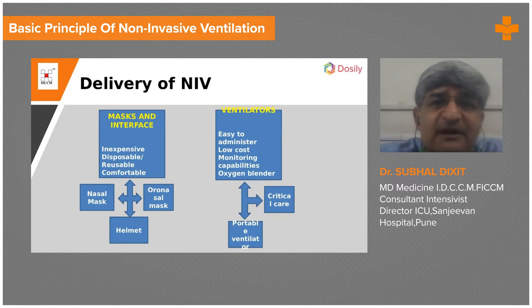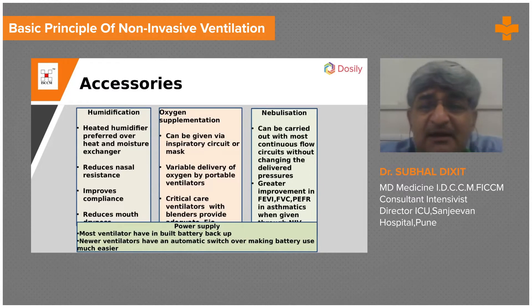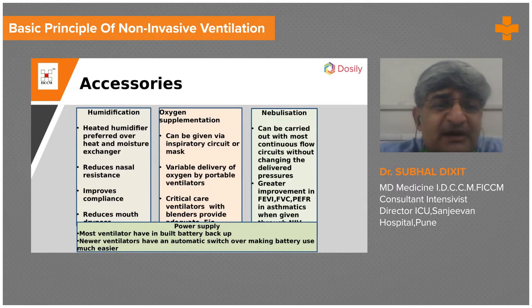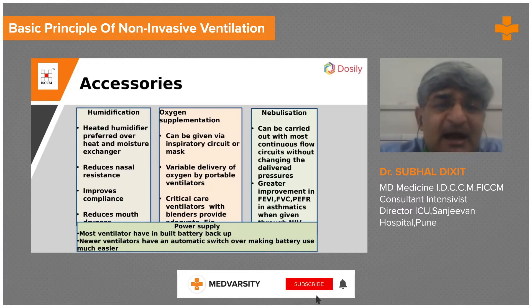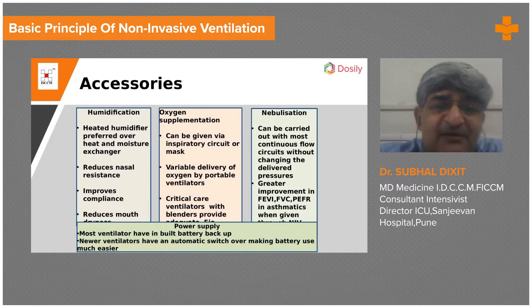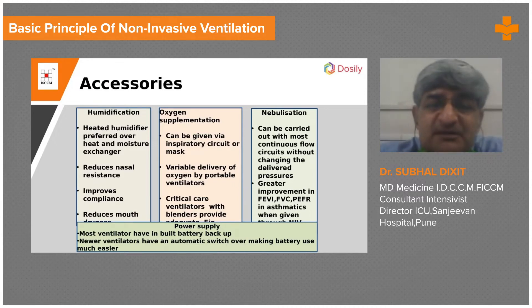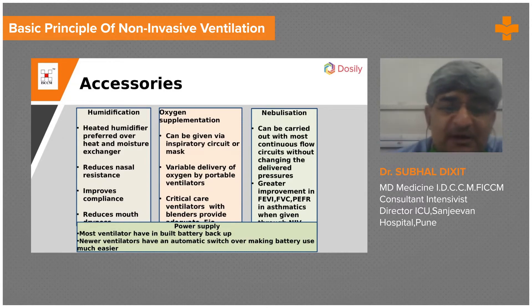We also have critical care ventilators which are now able to deliver non-invasive mechanical ventilation. The accessories include humidification — heat humidifiers filtered over heat and moisture exchange filters — which help to reduce nasal resistance. Humidification improves compliance, and oxygen can also be given via the inspiratory circuit. Critical care ventilators provide adequate FiO2, and nebulization can also be carried out with most continuous flow circuits without changing the pressures delivered to the patient.